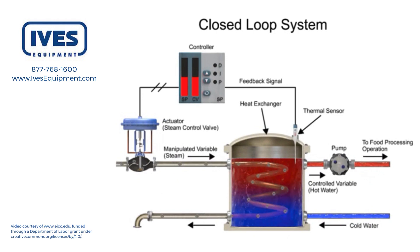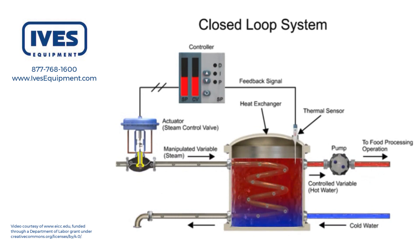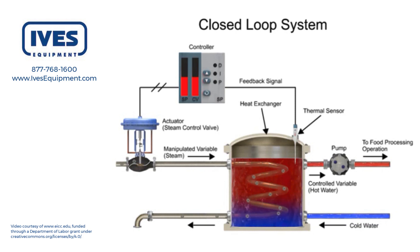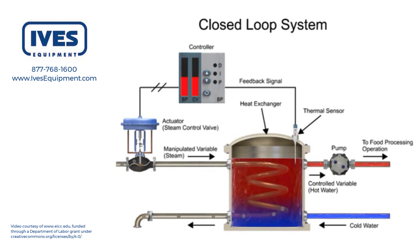The heat exchanger supplies heated water to a food processing operation. Cold water enters the bottom of the vessel where the water temperature rises as it passes through steam-heated coils before flowing out of the pump at the top.